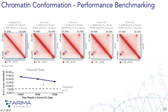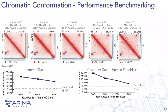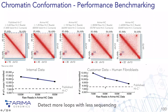This performance was validated internally and also by an early access customer on a human fibroblast cell line, who found the same result: with only 600 million reads, they identified about 3,000 more loops than the published data from deeper sequencing. This demonstrates a unique advantage of ARIMA Hi-C — detecting more loops with less sequencing effort.